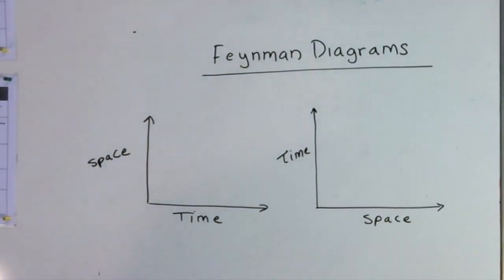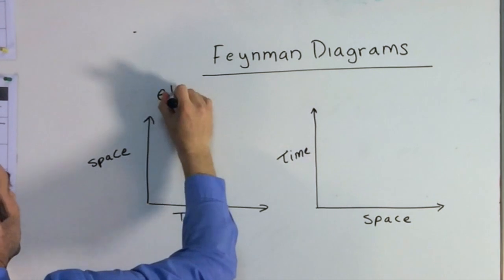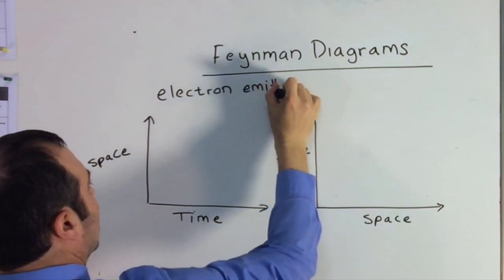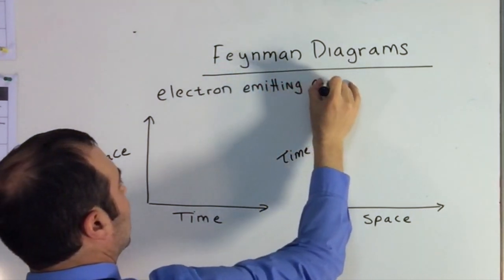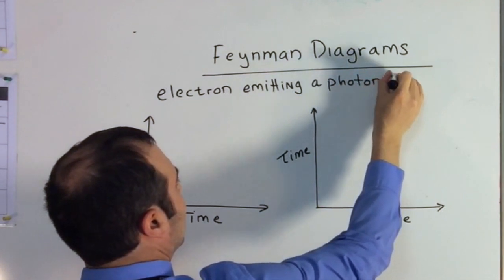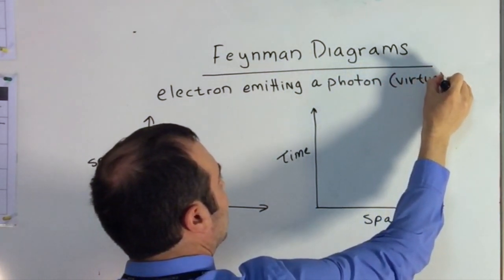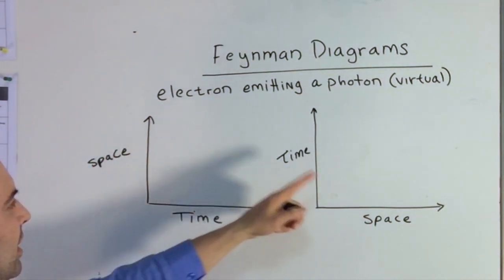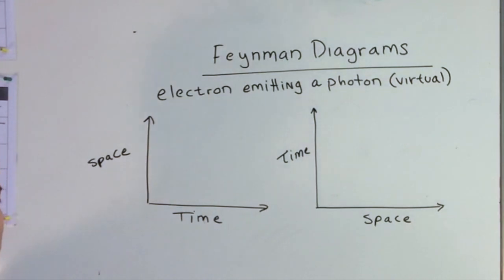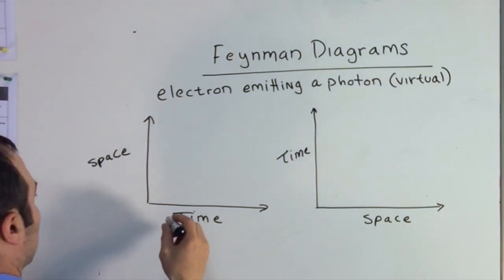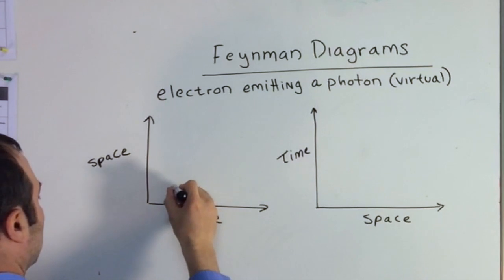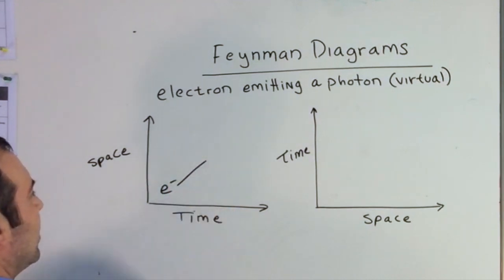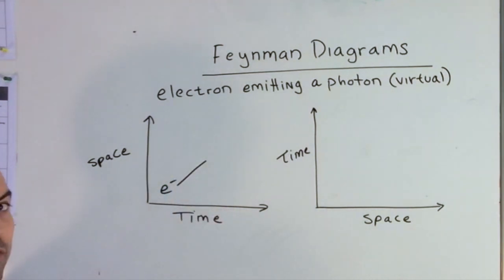One of the first things we're going to look at is an electron emitting a photon. If we have time and space on an axis, as time passes by, the electron is going to be moving in space. We'll put our electron in here, and at this point in time, it's going to emit a photon.